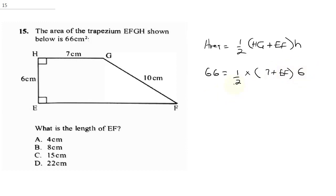So from here, 2 here is 1, 2 into 6 would be 3. So this would be 66 is equal to 3 into 7 plus EF.